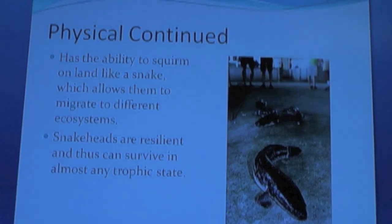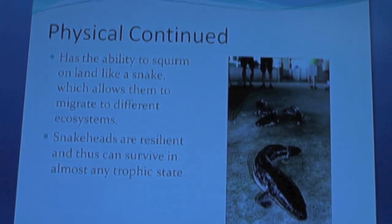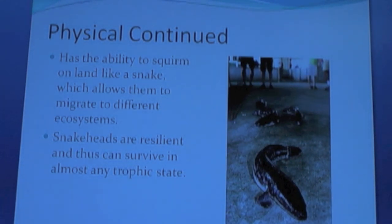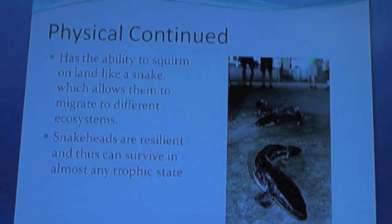Physical characteristics continued: Snakehead species have the ability to squirm on land like a snake, which allows them to migrate to many different ecosystems. Snakeheads are resilient and thus can survive in almost any trophic state.